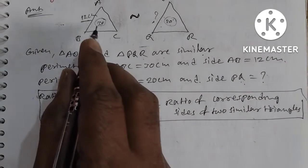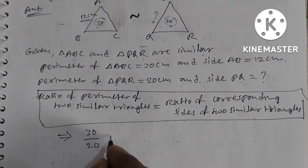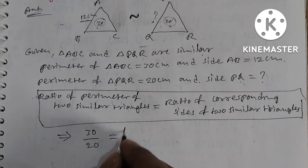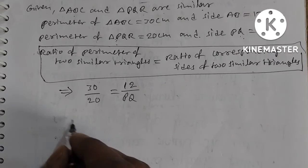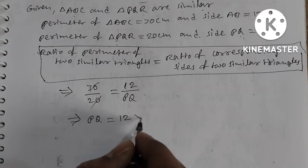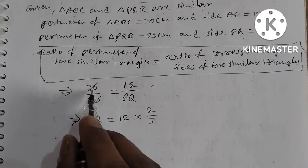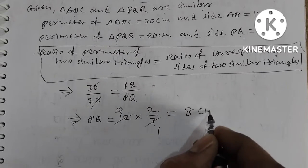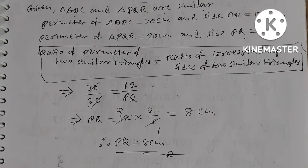So, 30 by 20 is equal to AB by PQ, which gives us 30 by 20 equal to 12 by PQ. Simplifying — cancelling zeros — PQ is equal to 12 into 2 by 3. That gives PQ equal to 4 into 2 equals 8 centimeters. Therefore side PQ is equal to 8 centimeters.